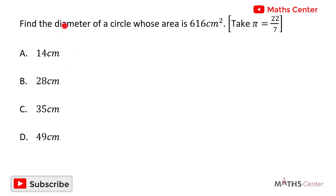The question wants us to find the diameter of a circle whose area is 616 cm squared. The area of a circle is given by the formula pi r squared, where r is the radius of the circle.